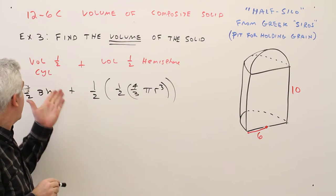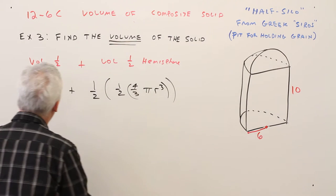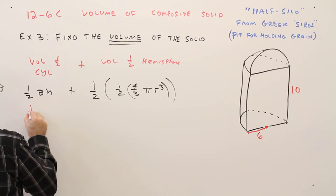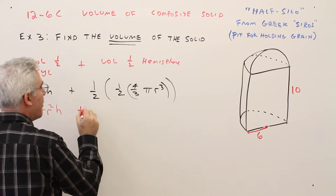And then I'm just going to, for the cylinder, again the base is a circle. That's pi r squared. So that'll be one half of pi r squared h plus,